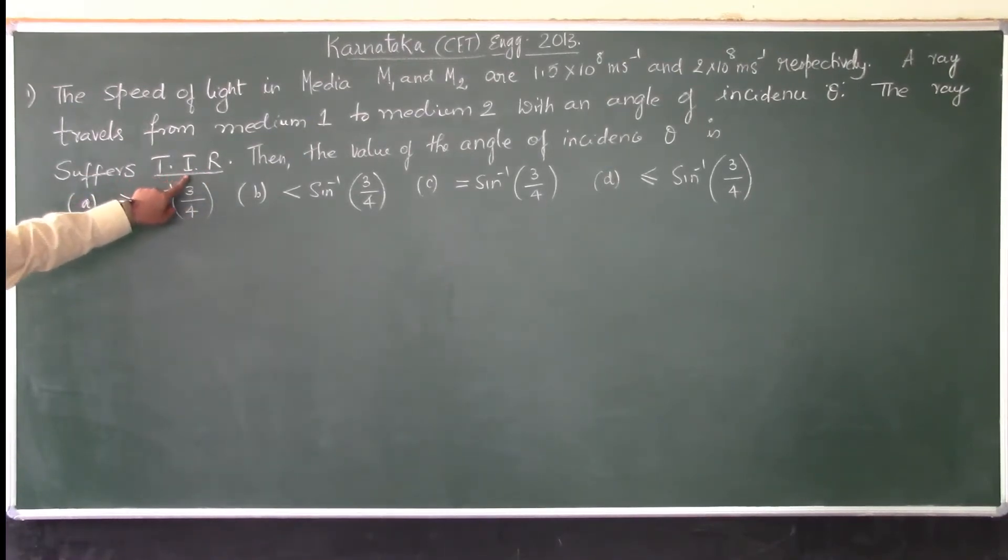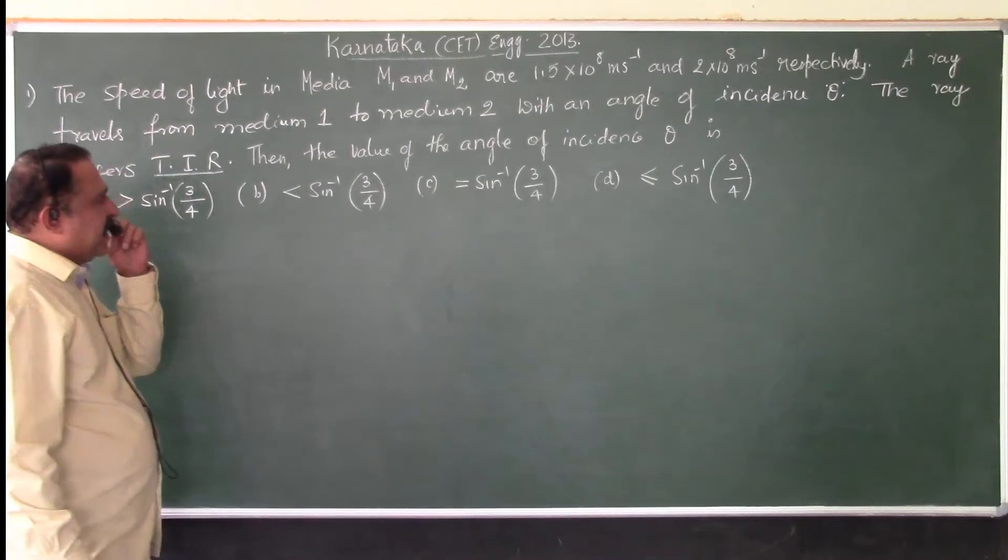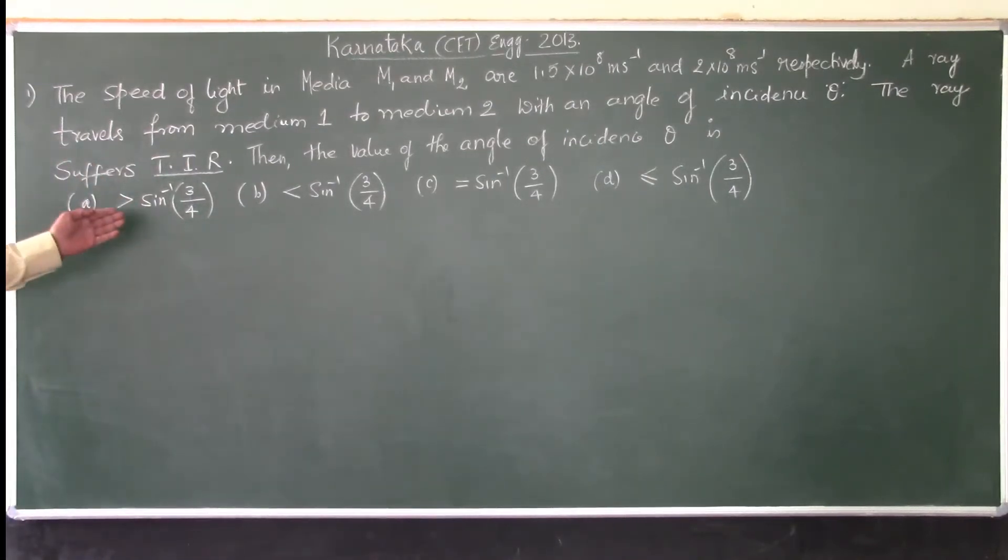The abbreviation I have used for total internal reflection is TIR. Then the value of the angle of incidence theta is, the 4 options are there.